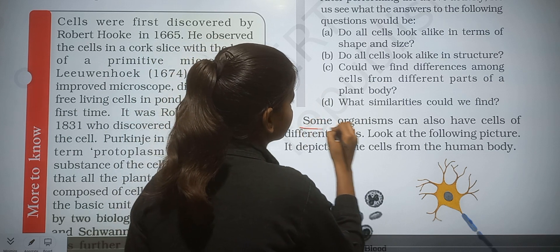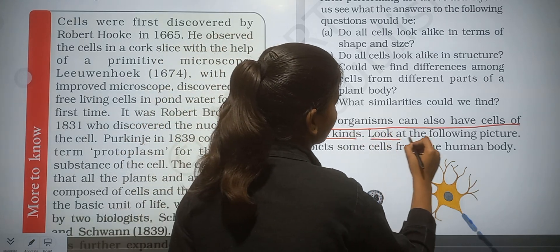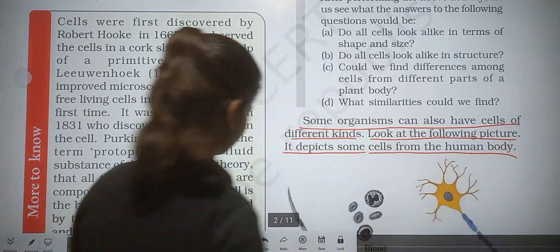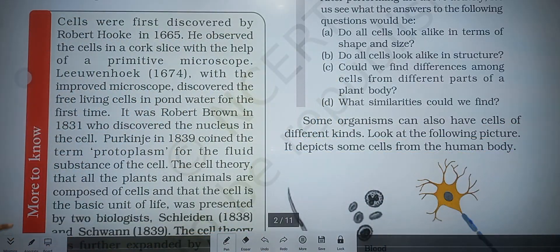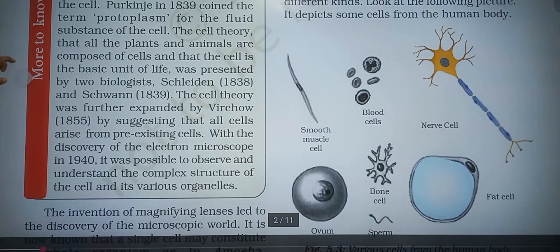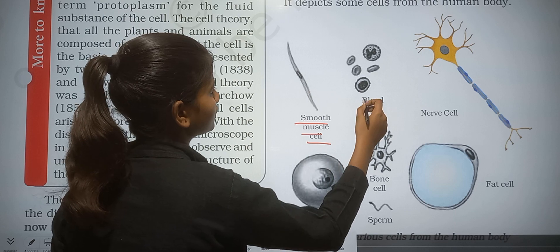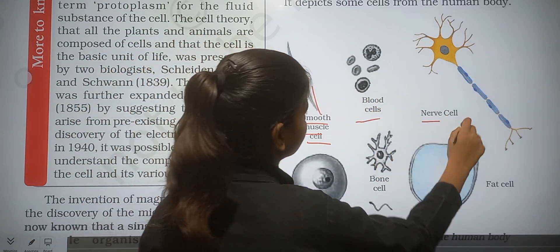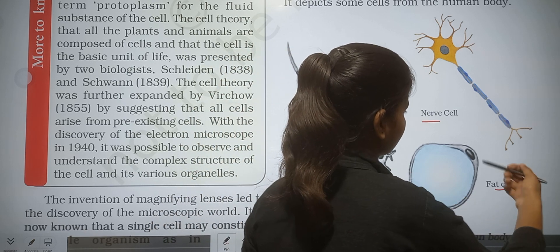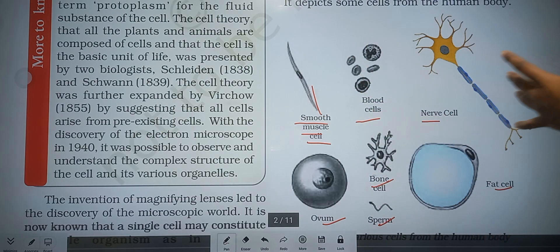Some organisms can also have cells of different kinds. Look at the following picture — it shows some cells picked from the human body: smooth muscle cell, blood cell, bone cell, sperm cell, and fat cell. These are the various cells from the human body.